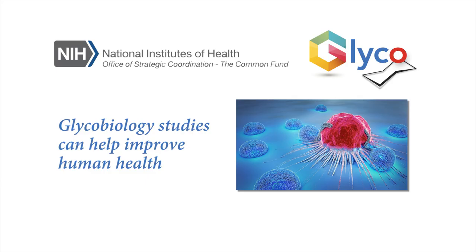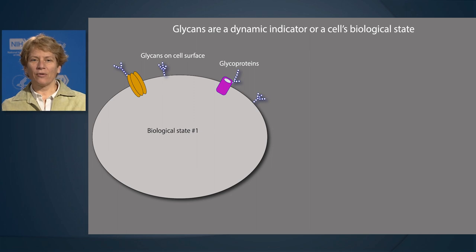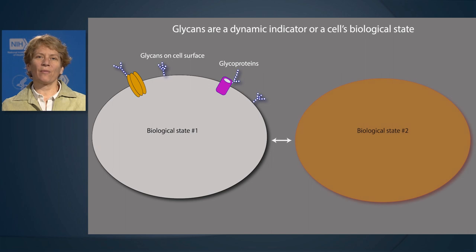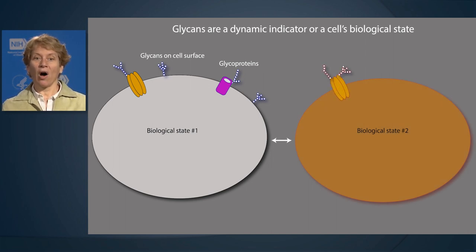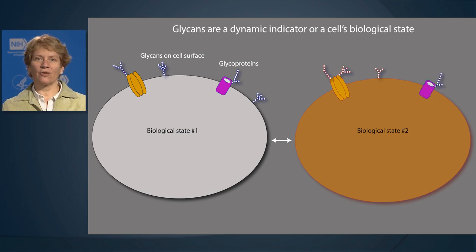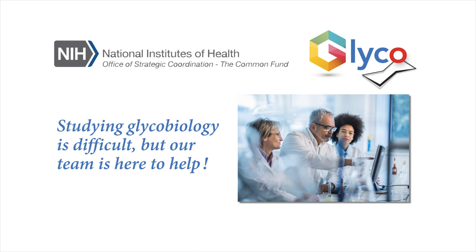Glycans play an important role in nearly all aspects of human health. Despite their importance, many researchers do not study glycans due to their complexity. Glycoproteins are major components of the cell surface, and when a cell changes from one state to another, the structures of the glycans on those proteins can change. That information could allow one to detect and diagnose diseases. Studying the glycans in our bodies is a difficult task.